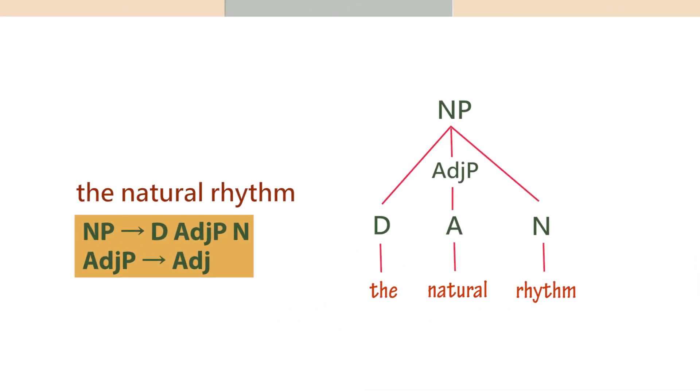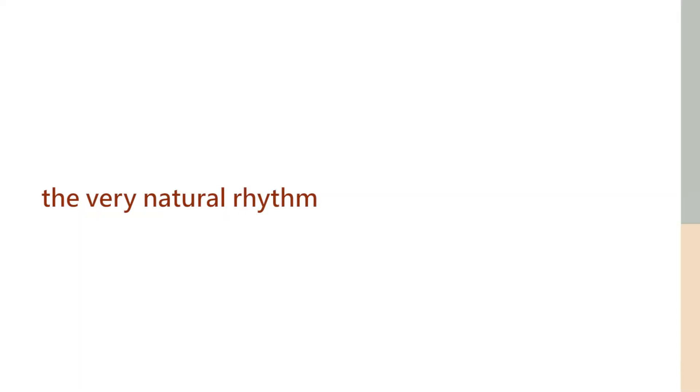Within the adjective phrase you only have an adjective, but potentially you could have more. For example, you could have 'the very natural rhythm.' In that case, the word 'very' would be part of the adjective phrase: 'very natural.' The head of that adjective phrase would be 'natural.' The word 'very,' which is a degree word or quantifier, qualifies the adjective. It gives you more information about the adjective, which is the head.